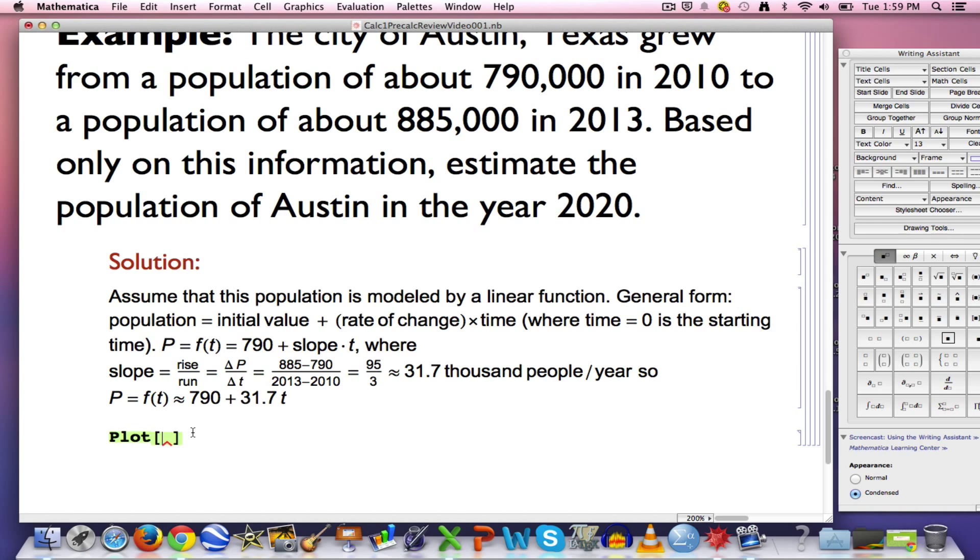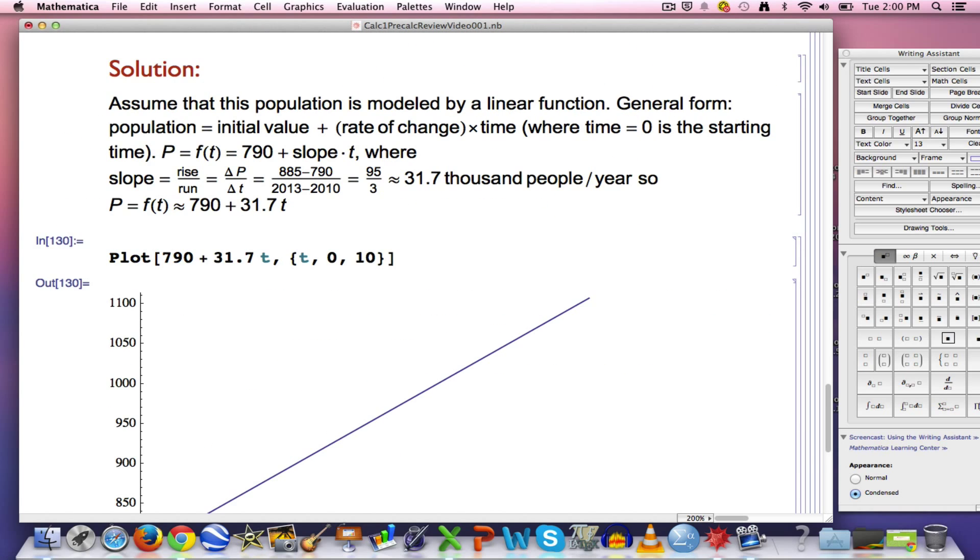Again the square brackets indicate that this is a command, this is a function. I want to put some inputs in here. The first input should be the function that I'm going to graph, 790 plus 31.7 times T. Then you put a comma. You put commas in between the separate inputs for the function. The next thing you want to put is the range of values for T, and here's the way you do it. You use curvy braces like this. Let's say T goes from 0 to 10 because I want to go out to 2020. This will produce a basic plot. Here we go, there it is.